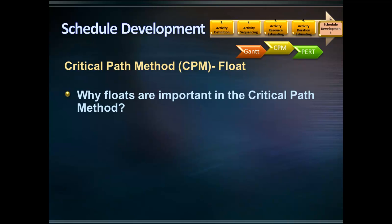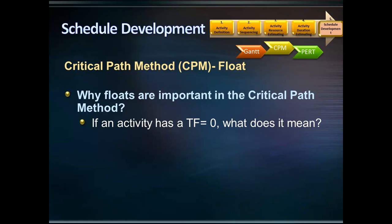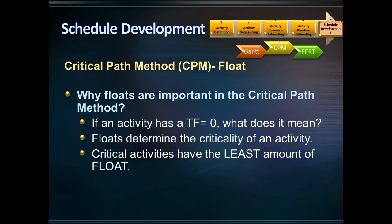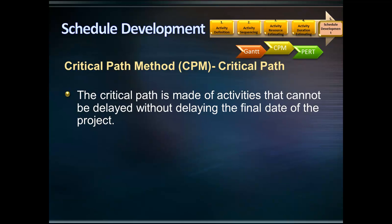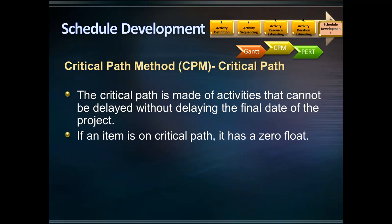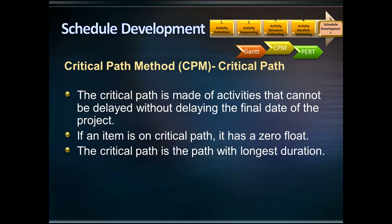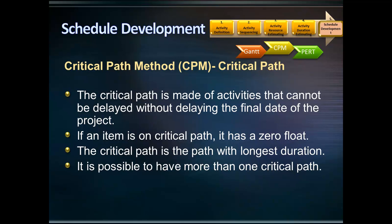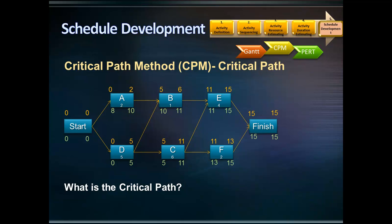Why are floats important in the critical path method? If an activity has a total float of zero, it means there is no room for delay in that activity. If it is delayed or extended, the overall project completion date will be extended — that activity is a critical activity. Floats determine the criticality of an activity; critical activities have the least amount of float, and floats determine the critical path. The critical path is the path of activities that cannot be delayed without delaying the final date of the project. When an item is on the critical path, it has zero float, and the critical path is the path with the longest duration. It is possible to have more than one critical path.